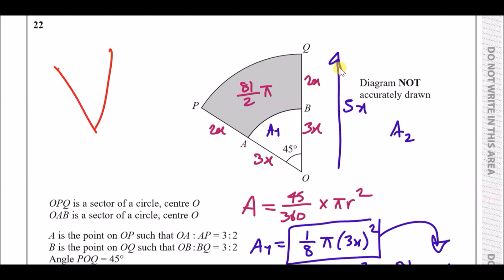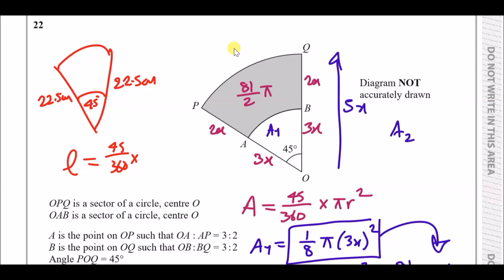So x is 4.5. The total large radius is 5x equals 22.5 cm, and the angle is 45 degrees. The arc length formula is the same fraction as the area formula: 45 over 360 times 2 pi r. For the large arc l1 with r equals 22.5, plugging into the calculator gives a length of 45 over 8 pi.